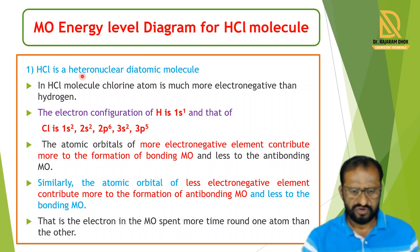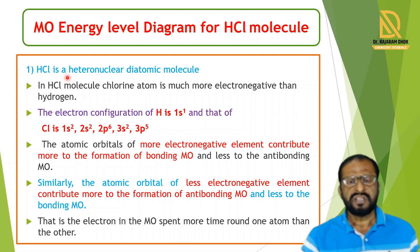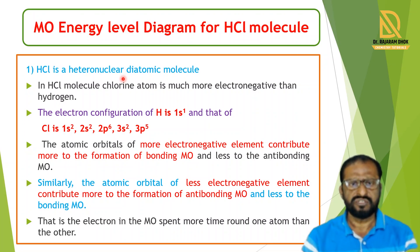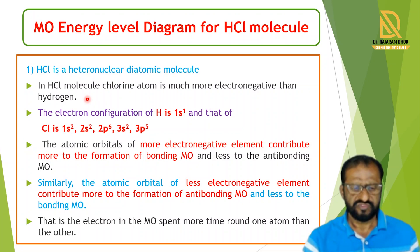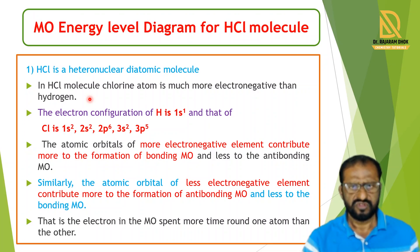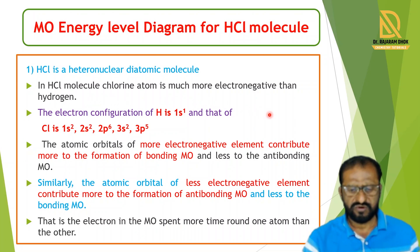In HCl, the HCl molecule is a heteronuclear diatomic molecule. Here, hydrogen and chlorine — two different atoms — are present. In the HCl molecule, the chlorine atom is more electronegative than hydrogen. So we write the electronic configuration of hydrogen and chlorine.